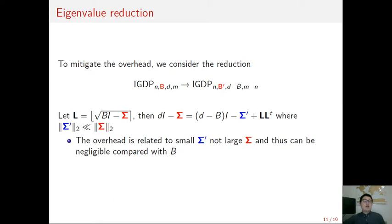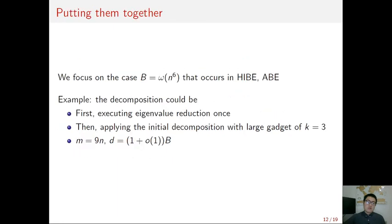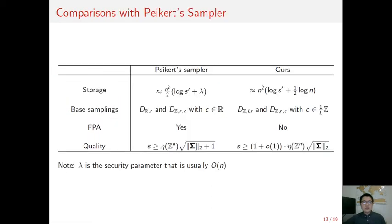Combining the eigenvalue reduction and the initial decomposition, we get our final decomposition. In some advanced applications like HIBE and ABE, the spectral norm of the matrix can be very large. In such a setting, the final decomposition could be like this. We first perform the eigenvalue reduction once, and then we apply the initial decomposition with k equals 3. The resulting integral gram root will have a column number 9n. And this method applies to some D only slightly larger than B.